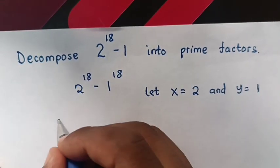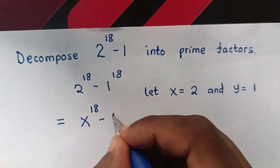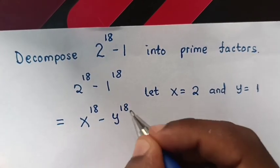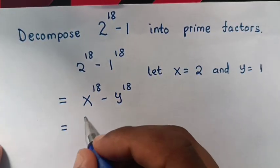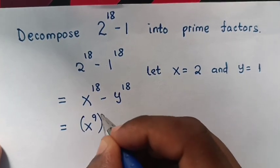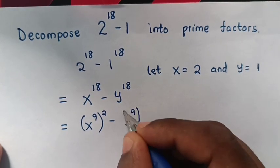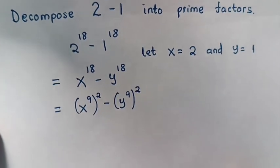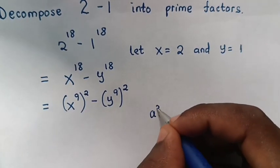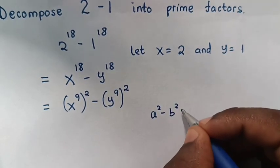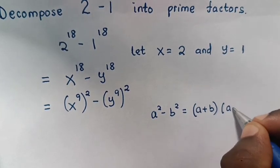So here it will be x power 18 minus y power 18. This expression will be equal to (x power 9) squared minus (y power 9) squared, which is in the form of a squared minus b squared, equal to (a plus b) times (a minus b).